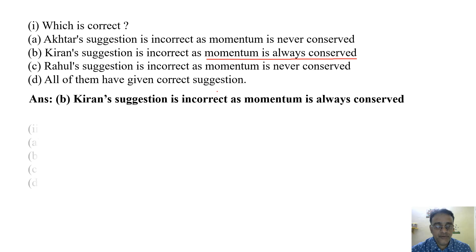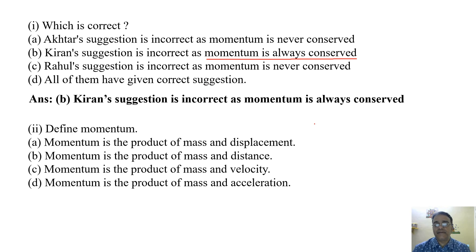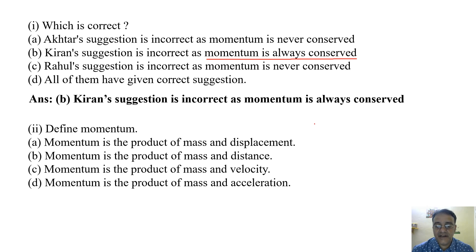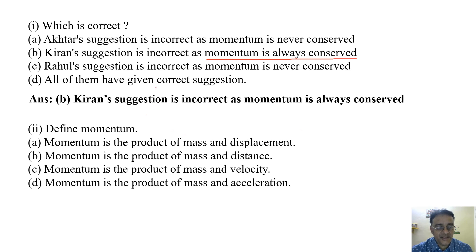Now we will move to the next question: define momentum. The options are: momentum is the product of mass and displacement; momentum is the product of mass and distance; momentum is the product of mass and velocity; momentum is the product of mass and acceleration. We know the formula P = M × V, so the correct answer is option C.